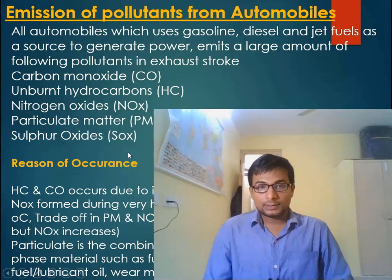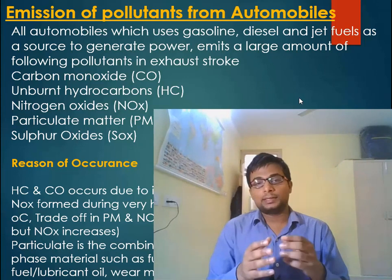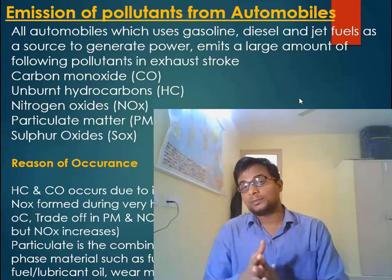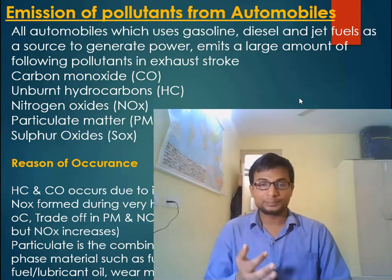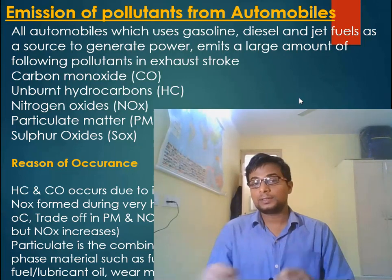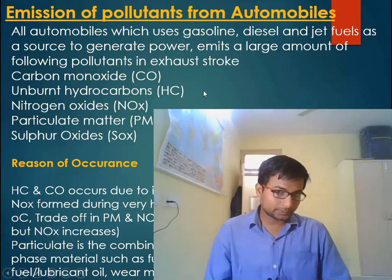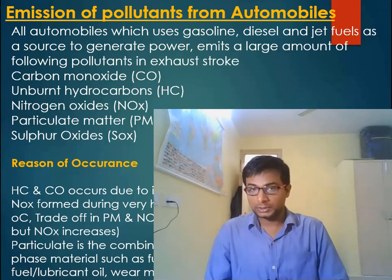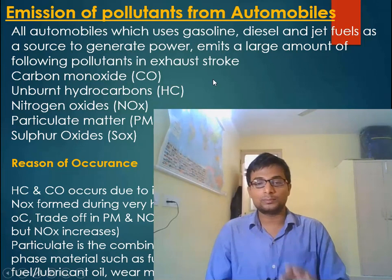Out of these pollutants, the first two — carbon monoxide and unburnt hydrocarbons — basically form due to incomplete combustion of fuel. Whenever any hydrocarbon burns completely, the flue gas formed will be carbon dioxide and water. But if there is insufficient oxygen, there will be incomplete combustion and the product will be carbon monoxide and water. If there is further incomplete combustion, some of the hydrocarbon may remain unburnt.